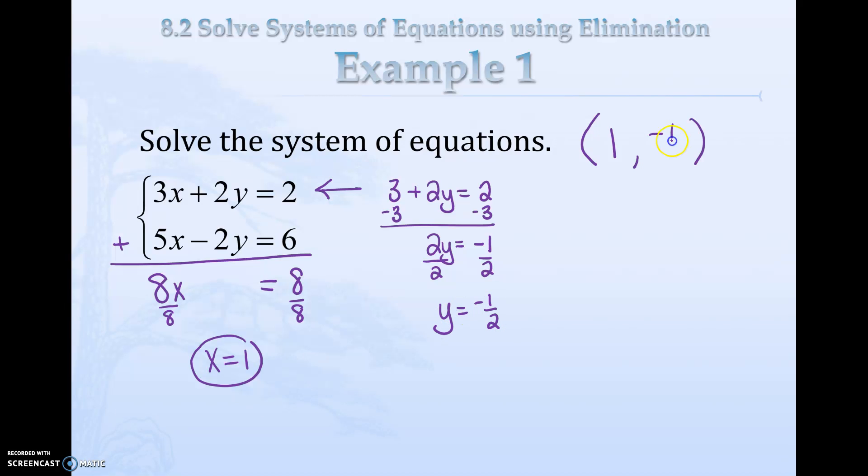Subtract 3 on both sides to get 2y equals negative 1. Divide both sides by 2, y equals negative 1 half, and there's our solution. I feel like that was less work than substitution. With substitution we'd have to get a letter by itself and then plug it into the other equation. Sometimes elimination requires more work than this, but I feel like there's fewer opportunities to make mistakes.